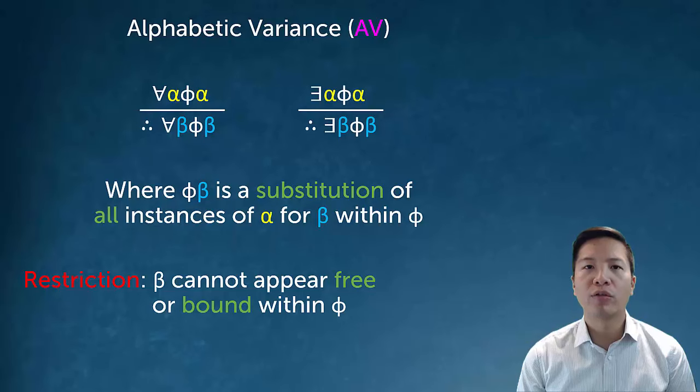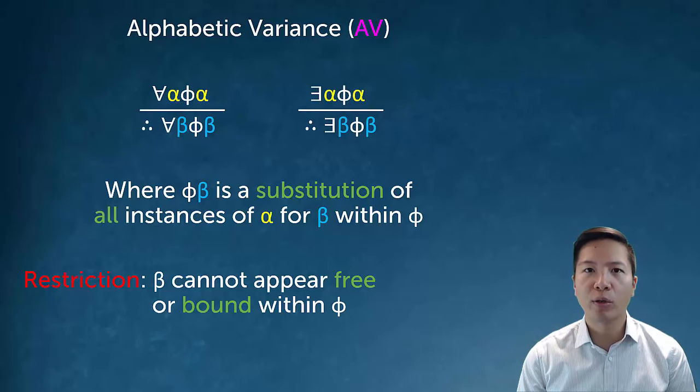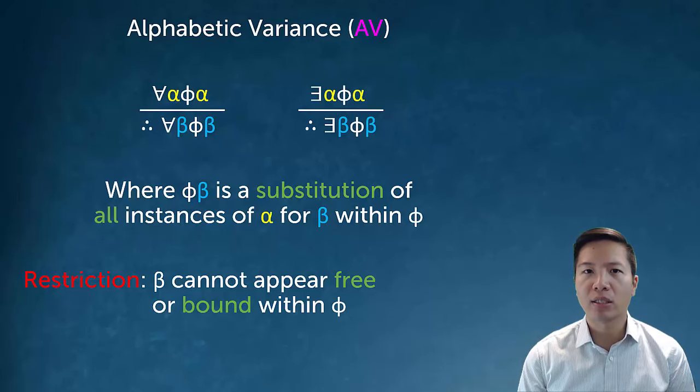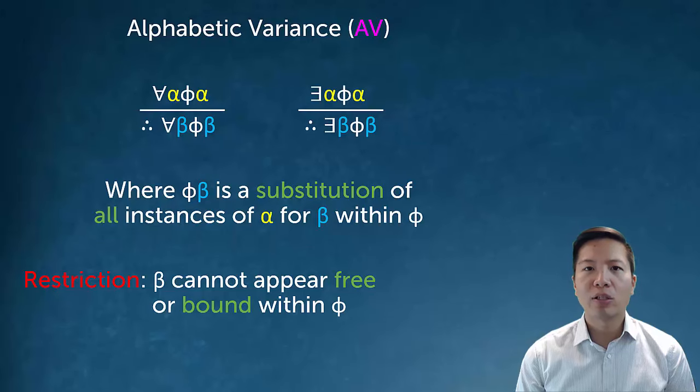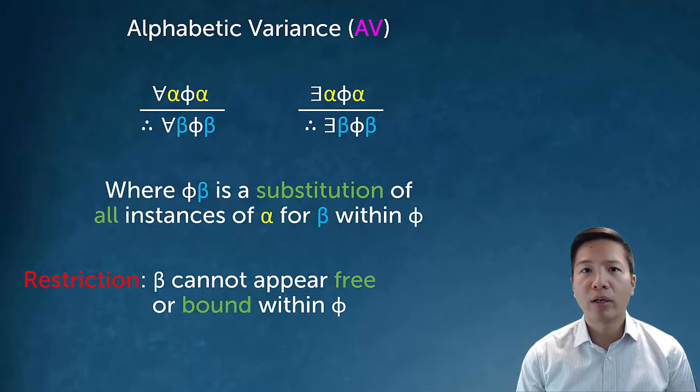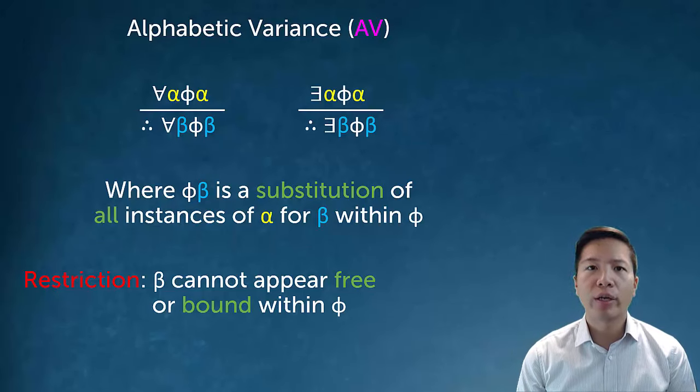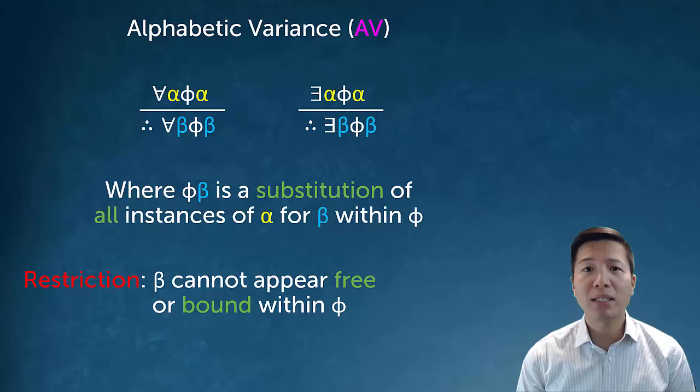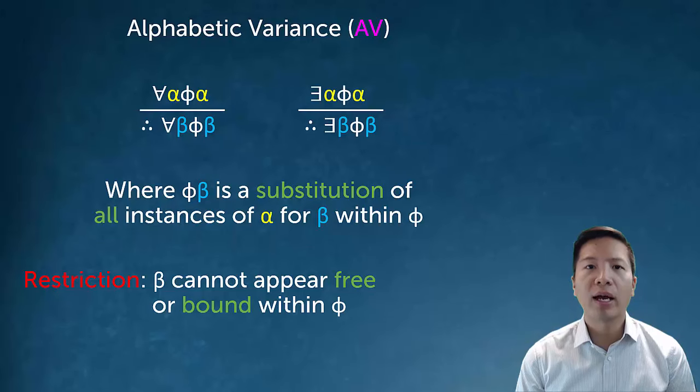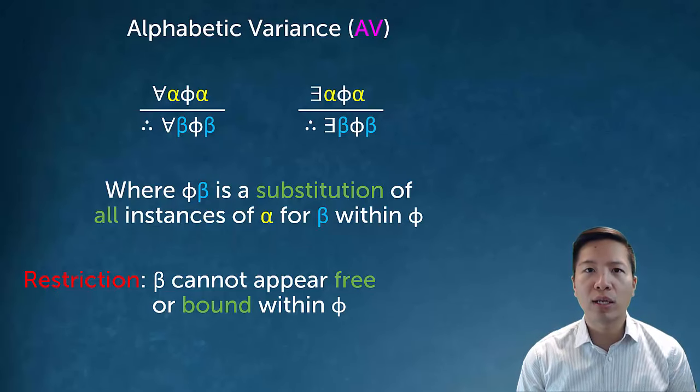Now, there is a formal rule that sort of demonstrates how we can actually change the variable letter so that we don't have to look at ugly sentences like that. And that rule is alphabetic variance. Alphabetic variance is sort of like a schematic rule. It says if I have a quantifier where my variables say alpha over the scope of a sentence, I can change all the instances of alpha and change the alpha bound to the quantifier to some new variable. And that's what the restriction is saying. You just can't do anything that would dramatically change the relationships in the sentence.